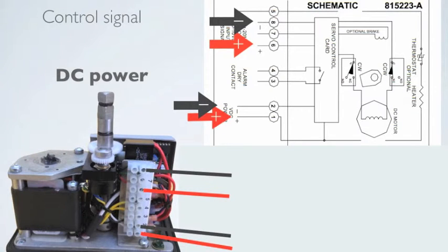The unit will do a self-test which will take 3 seconds. The unit will then move to the corresponding control signal that is being sent to the unit.